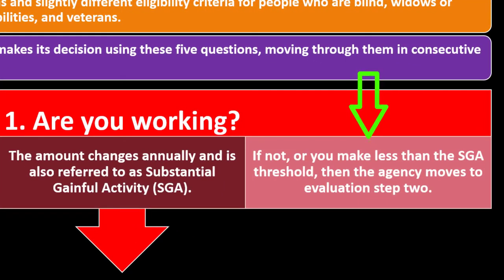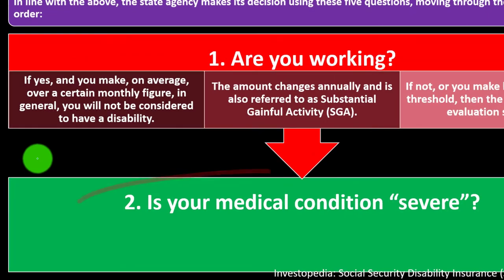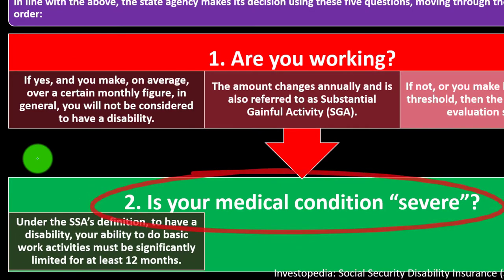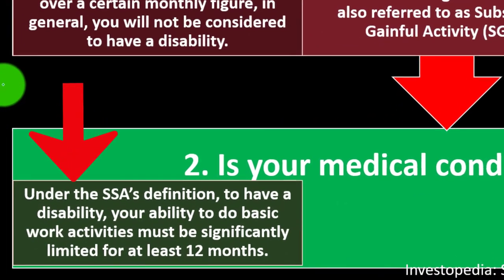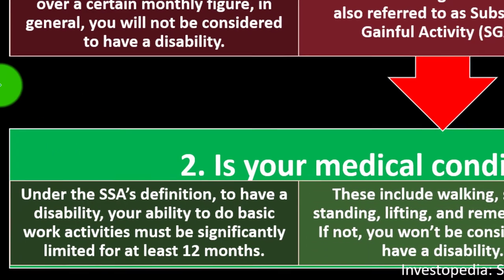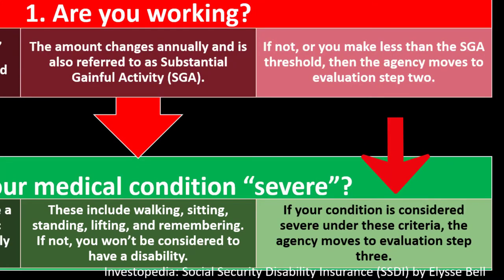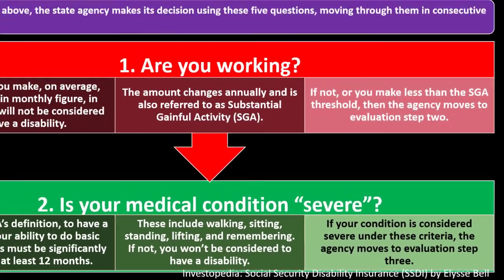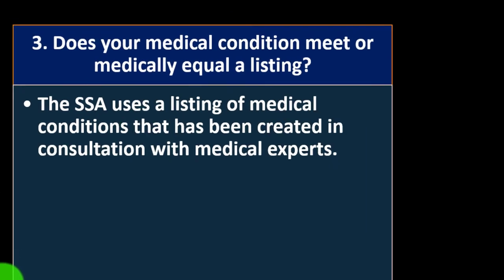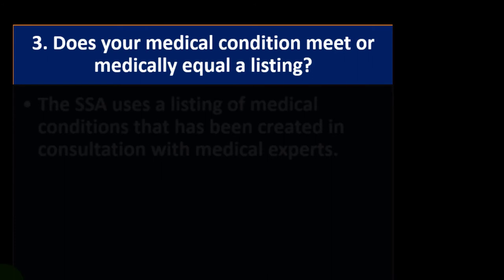If you make less than the SGA threshold, the agency moves to step two: Is your medical condition severe? Under the SSA's definition, your ability to do basic work activities must be significantly limited for at least 12 months. These basic activities include walking, sitting, standing, lifting, and remembering. If your condition is not considered severe, you won't be considered to have a disability.